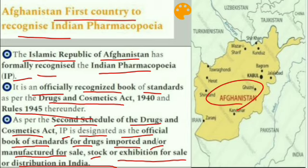Afghanistan's bordering countries include Turkmenistan, Uzbekistan, Pakistan, China, and India. The river Amu Darya is also associated with the region.